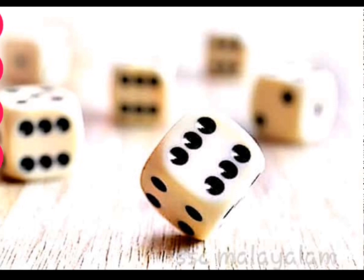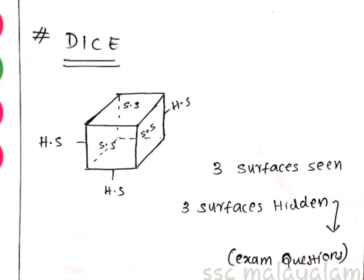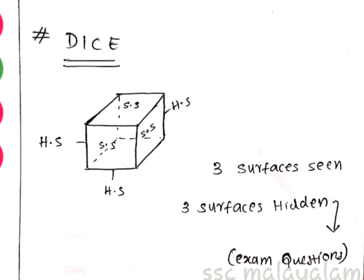I will talk about the two parts. Let's go to the first part of the die. Let's go to the base of the die. A die is just a cube — a figure with 6 sides.